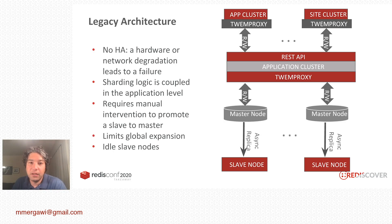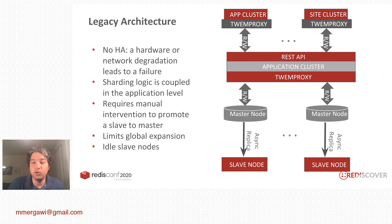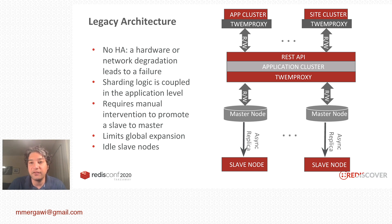In our legacy architecture, there was no highly available hardware, and any network degradation led to failure. The sharding logic was coupled at the application level. It was a typical architecture where we had TwinProxy deployed on every node of the clients — the apps and the site clusters — talking to an application cluster that had the sharding logic embedded. On the back end, the storage layer consisted of Redis master nodes backed by slave nodes.